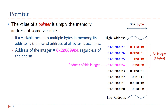Then the address of this integer is 0x2000004, regardless of the endianness. No matter what endian format is used — little endian or big endian — the memory address of this 32-bit integer does not change.